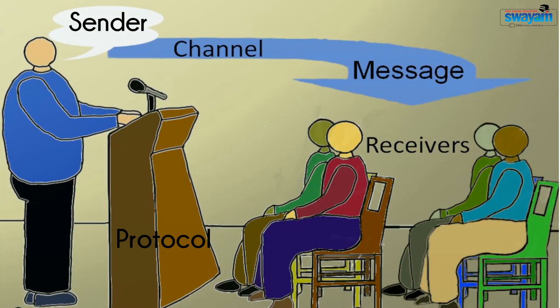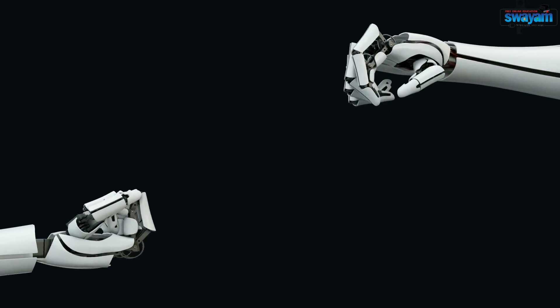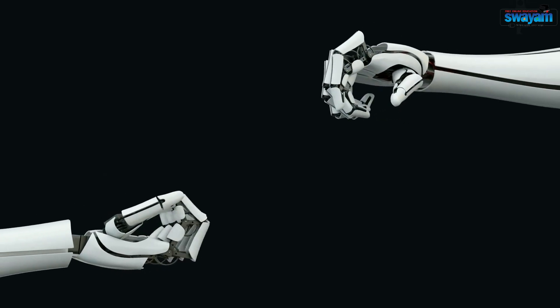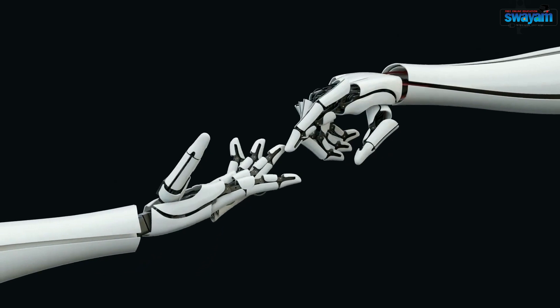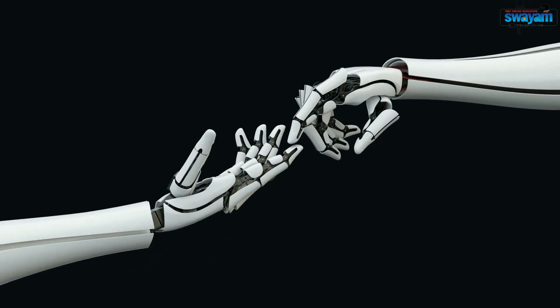Language has five components: sender, receiver, channel, message, and protocols. Similarly, programming language also has all these five components of communication, but in this case the receiver will not be a human but a computer.